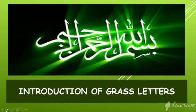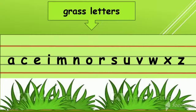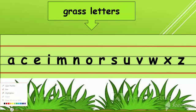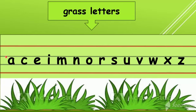Today we are going to learn grass letters. Do you know how many grass letters are there? There are 14 grass letters. Grass letters are written on the middle two lines.